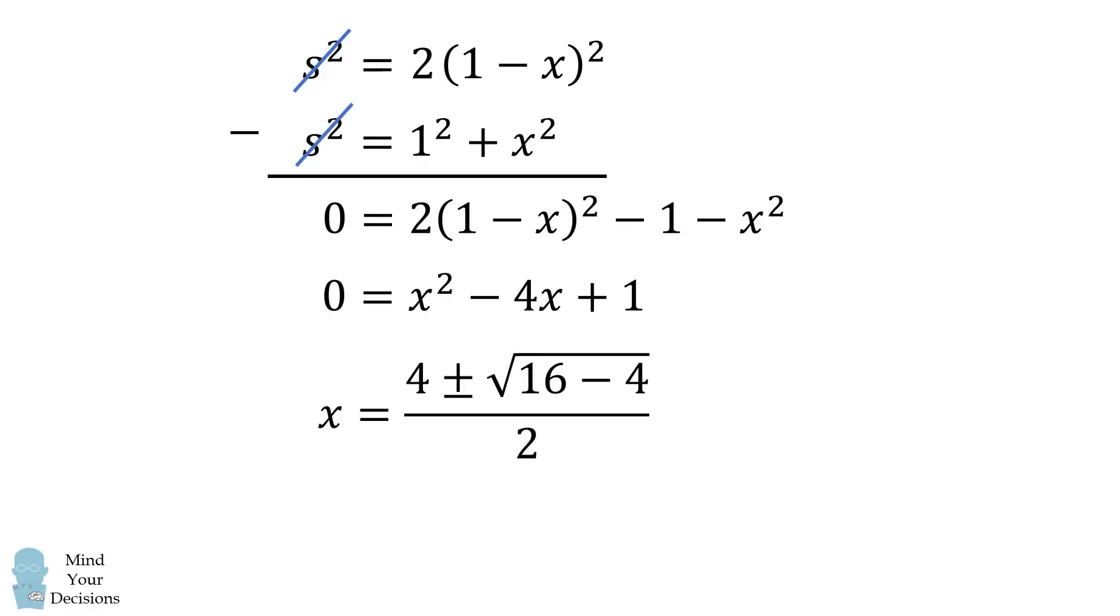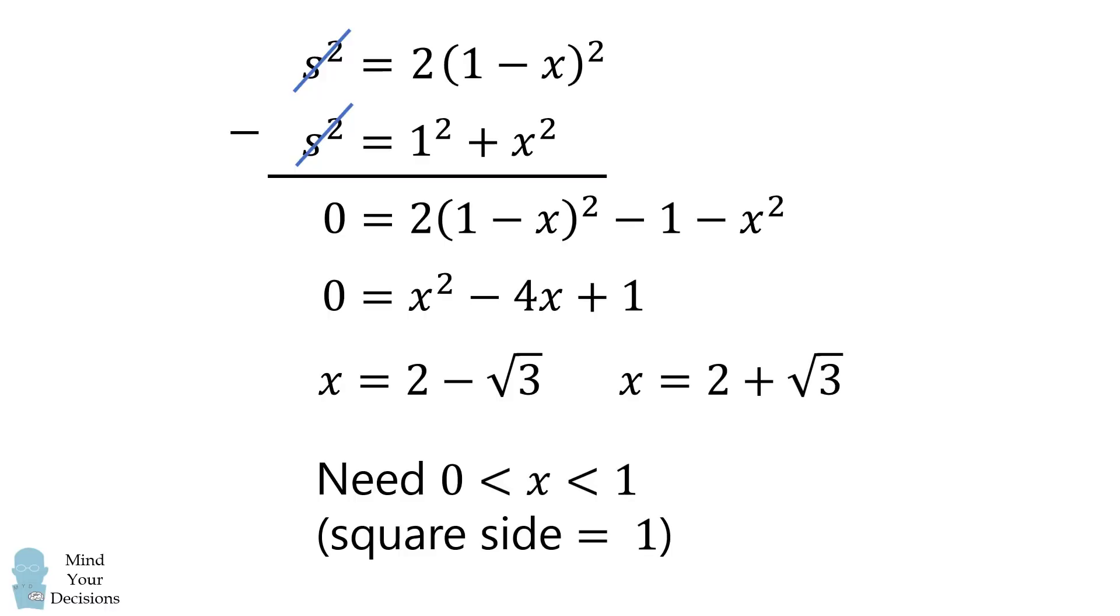We use the quadratic formula, and then we simplify to get two possibilities: x is equal to 2 minus root 3, and x is equal to 2 plus root 3. Now recall that x has to be less than the side of the square, so x has to be between 0 and 1. Therefore, we reject 2 plus root 3, and we accept 2 minus root 3.